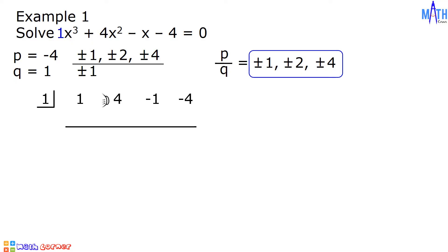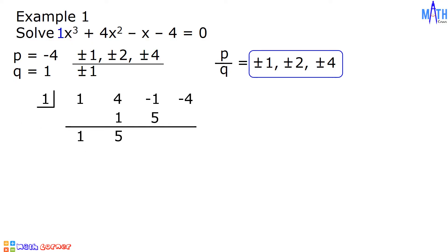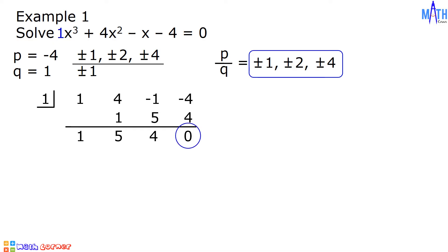Let us bring down positive 1. 1 times 1 is equal to positive 1. 4 plus 1 is equal to 5. 1 times 5 is equal to positive 5. Negative 1 plus 5 is equal to 4. 1 times 4 is equal to positive 4. And negative 4 plus 4 is equal to 0. Since the remainder is equal to 0, it means that 1 is one of the roots of this polynomial equation.